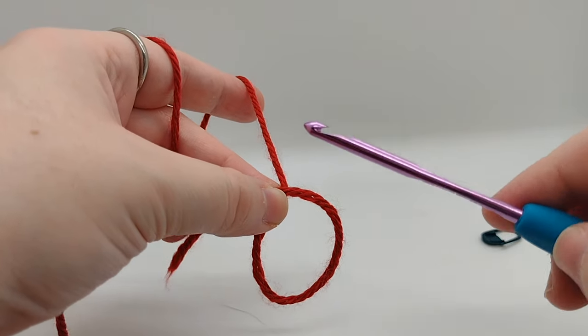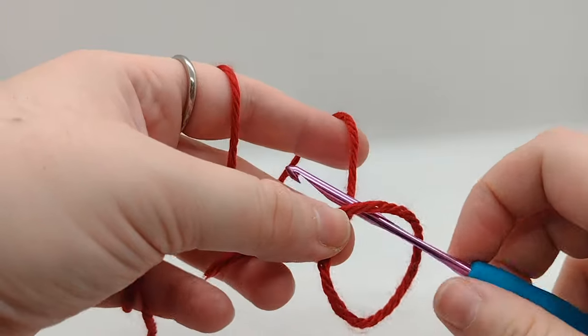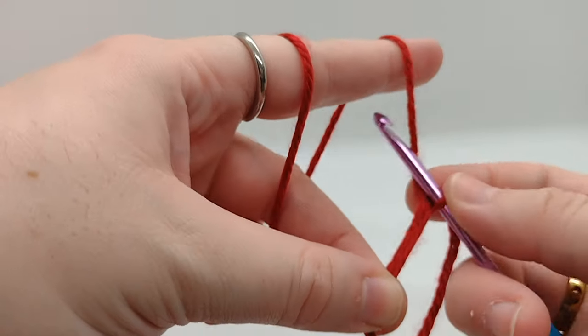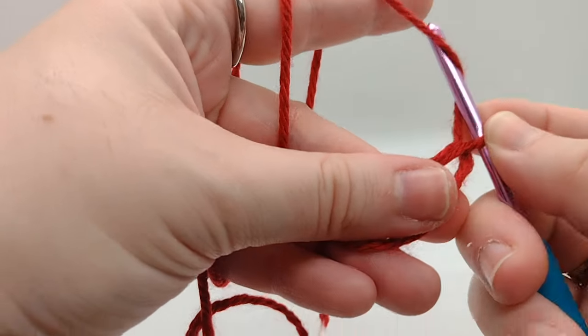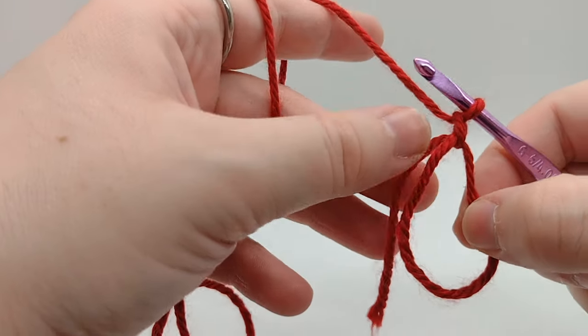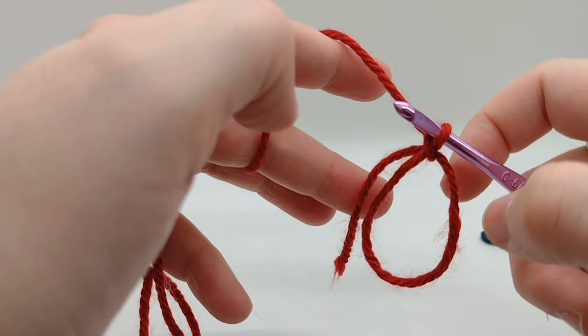So next step is to get the crochet hook, then just yarn over. This is a bit of a messy one, sorry. I'm not used to having a camera in front of me. Then pull that through the loop, and then you can actually let go of this and hold it like so.